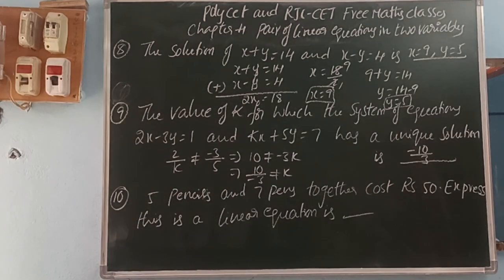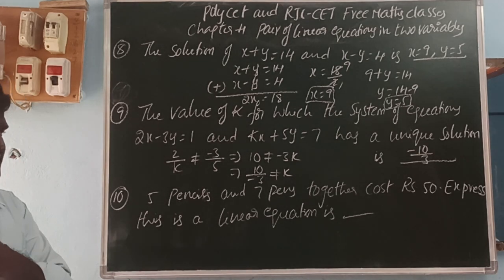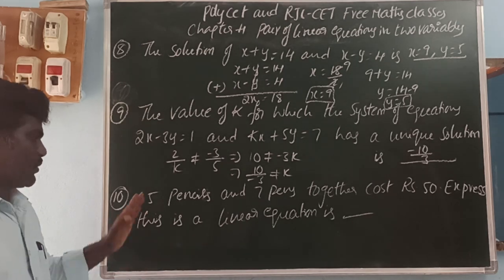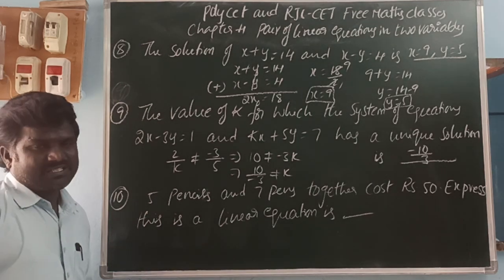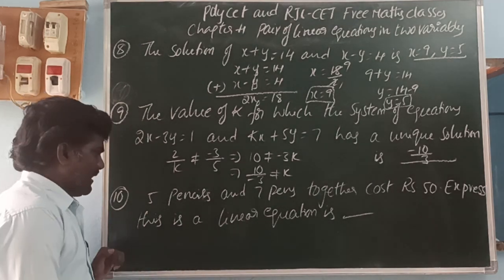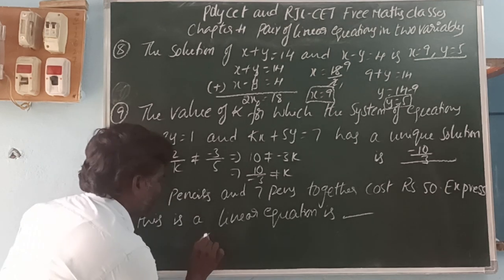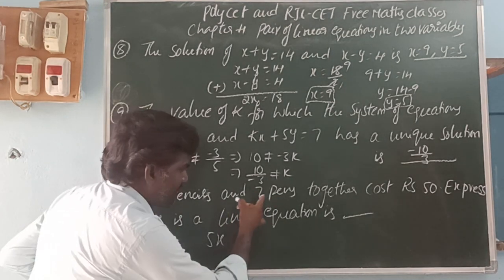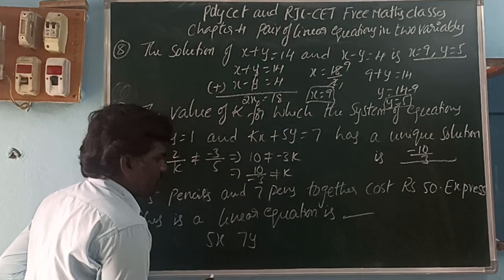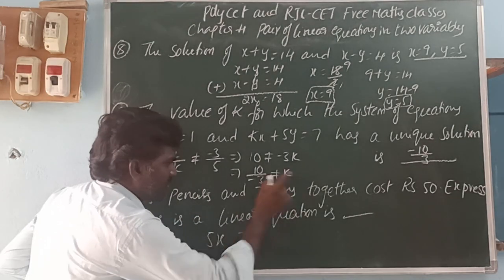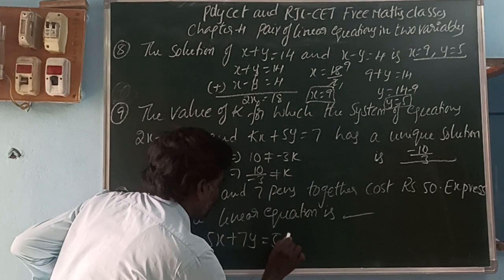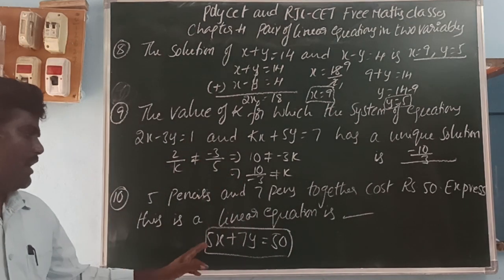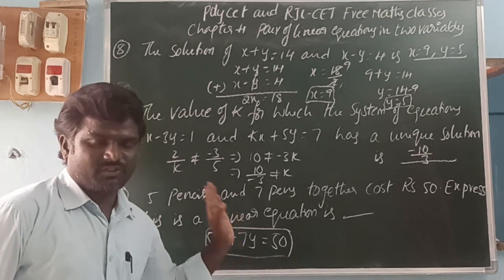Next, 5 pencils and 7 pens together cost 50 rupees — express this as a linear equation. Let each pencil cost x, so 5 pencils cost 5x. Let each pen cost y, so 7 pens cost 7y. Together the cost is 50 rupees. So the linear equation in two variables is 5x plus 7y equals 50.